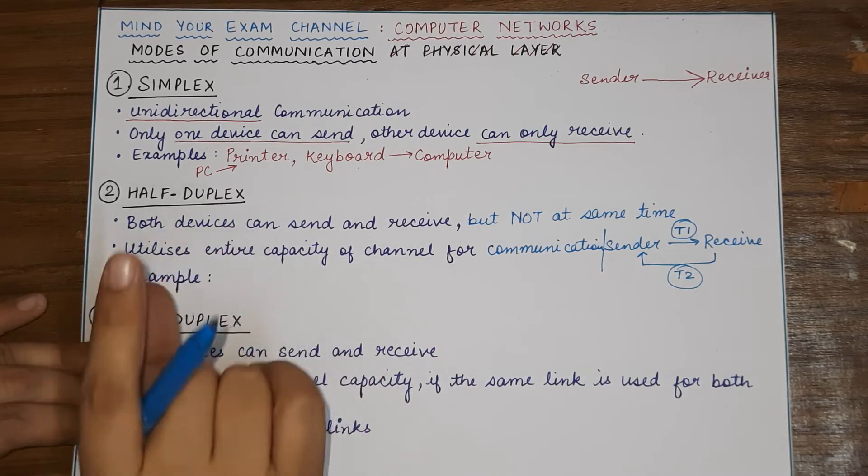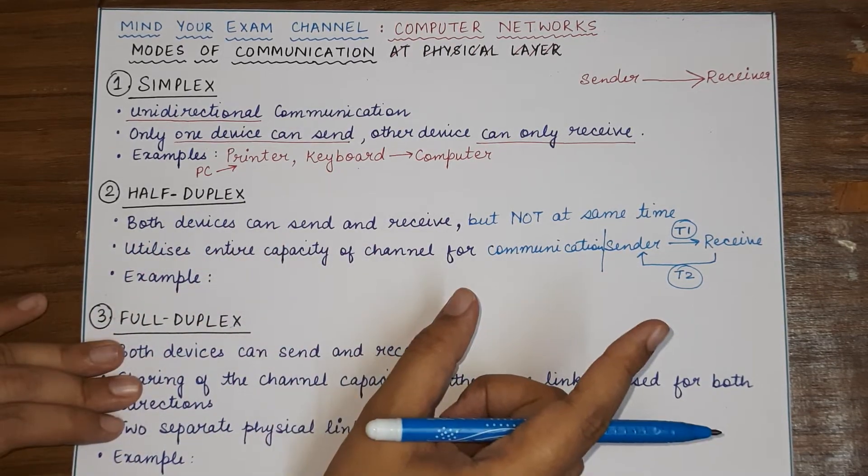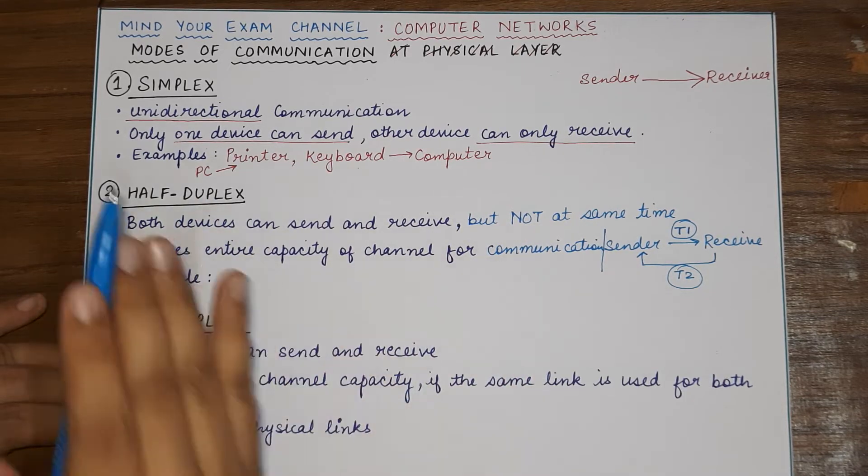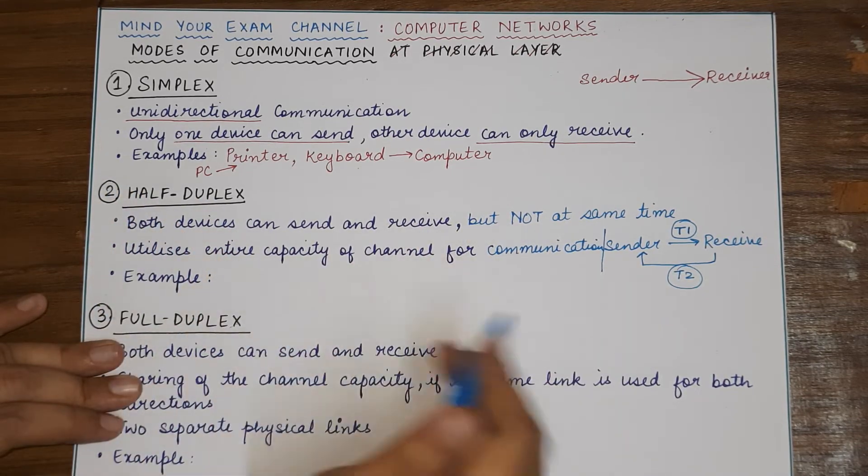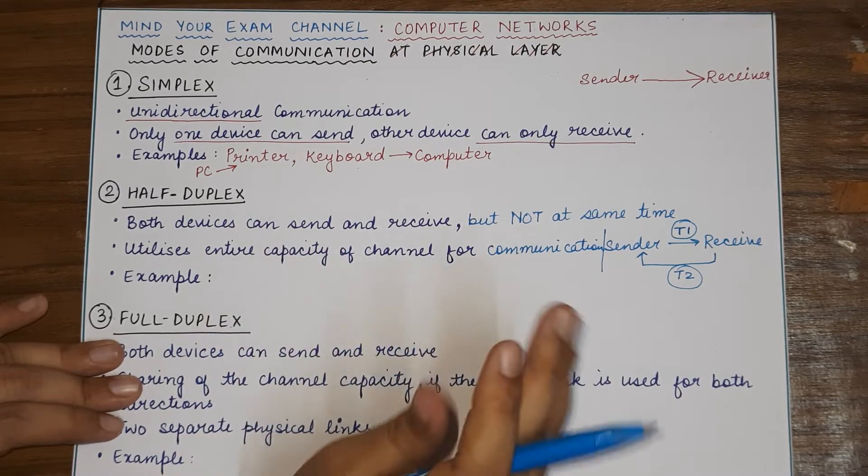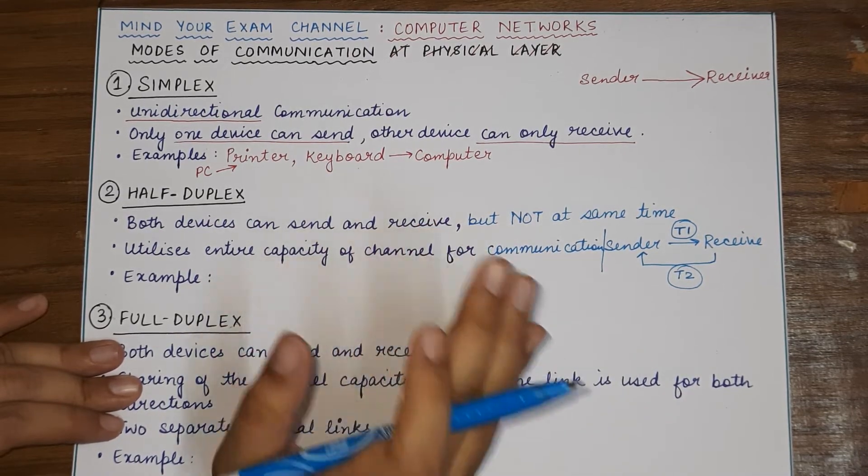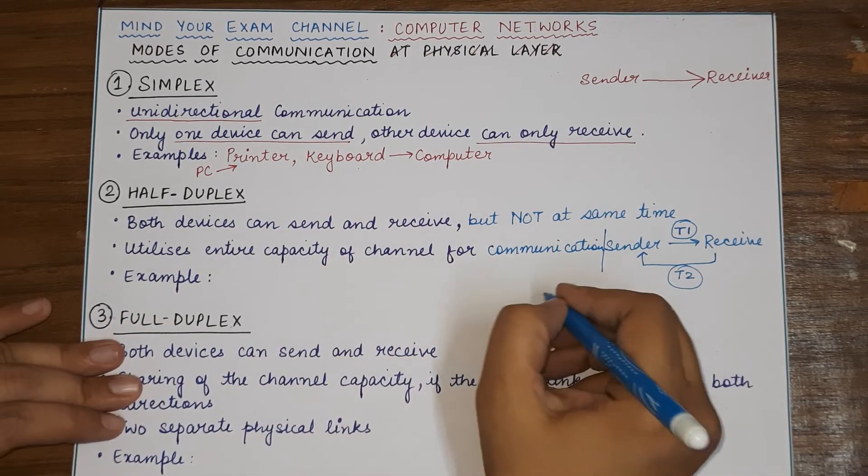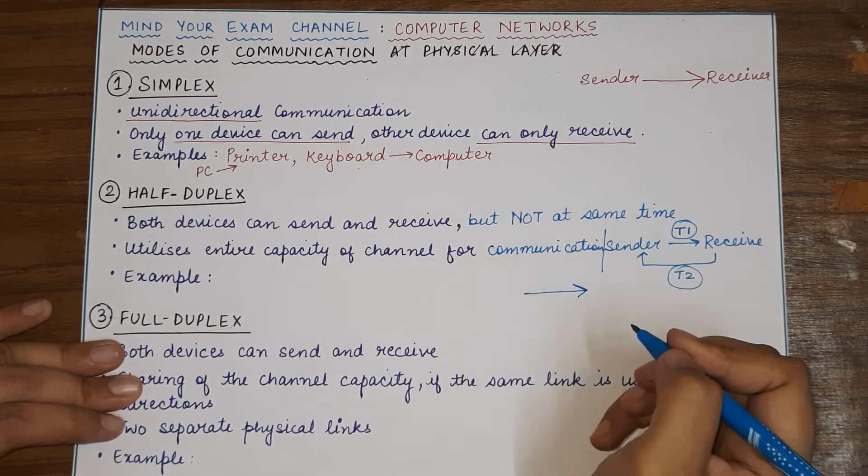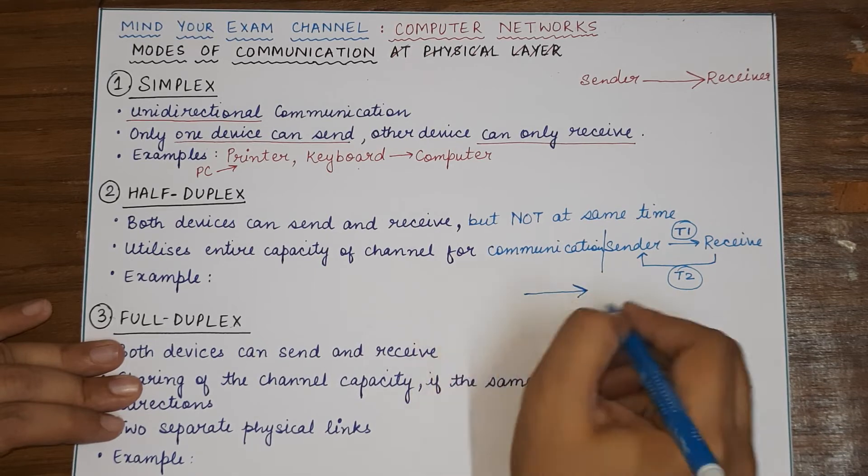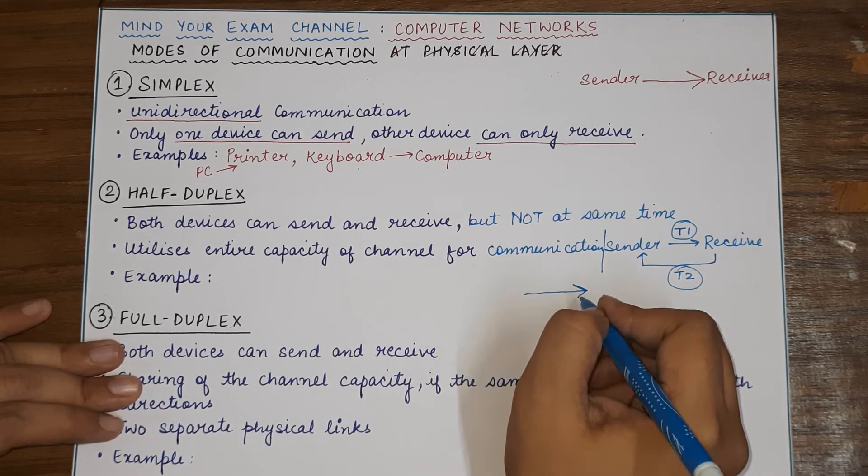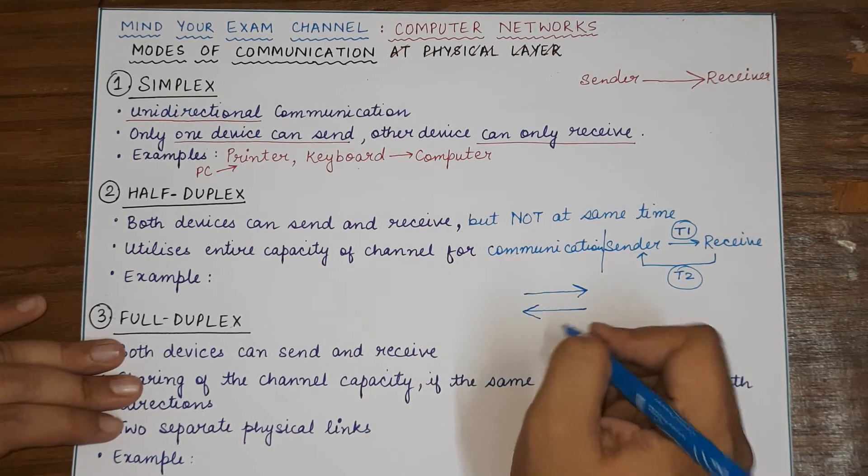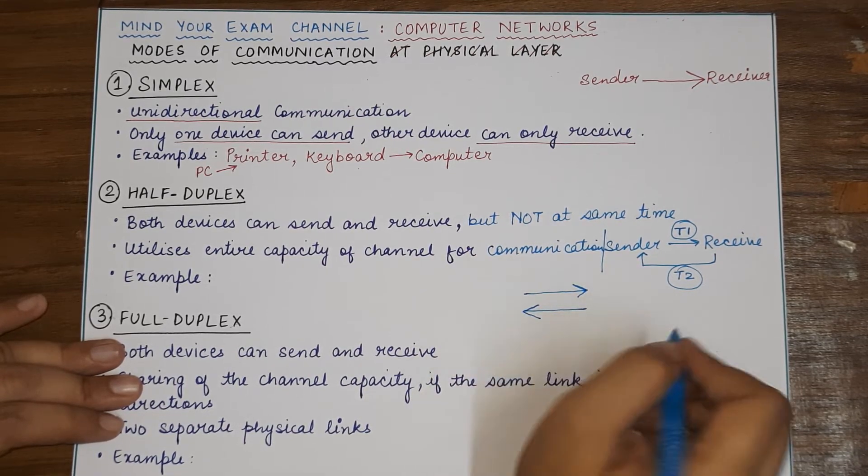And when in half-duplex, the data will flow in the other direction, that particular transmission link will now be entirely used to communicate in the other direction. So, at any time, either this side communication will take place using the entire channel capacity or the other side communication will take place again using the entire channel capacity.